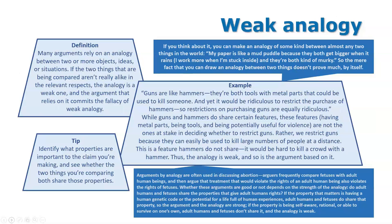The weak analogy: many arguments rely on an analogy between two ideas, but if the things being compared aren't really alike in relevant aspects, the analogy is weak. For example, 'Guns are like hammers' — that's a weak analogy. You can make an analogy between almost any two things, like 'my paper is like a mud puddle because they both get bigger when it rains.' The tip is to identify what properties are actually important to the claim you're making.